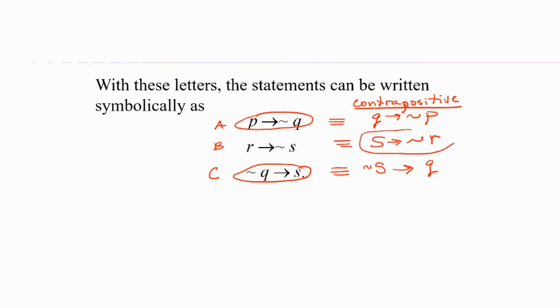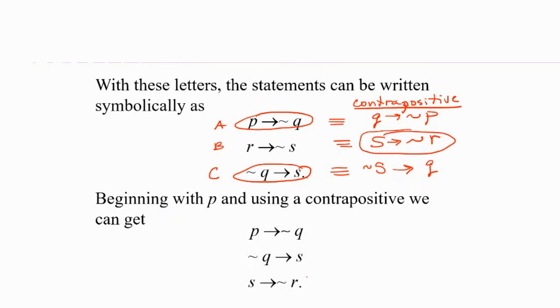We could go from A to C. C ends with S. And then what starts with S? The contrapositive version of B starts with S. So we could basically rewrite B as S implies not R. We have A and then C and then the contrapositive of B creates a chain reaction. P implies not Q, which implies S, which implies not R. So a big chain reaction gives us the valid conclusion that P implies not R.